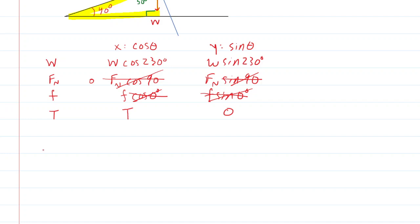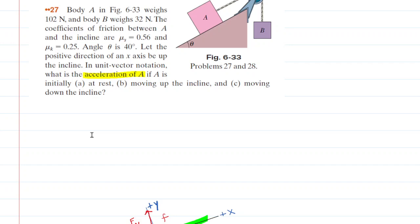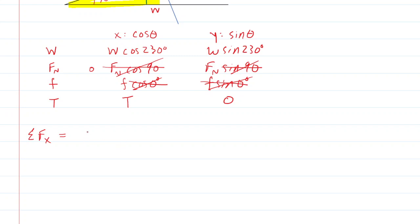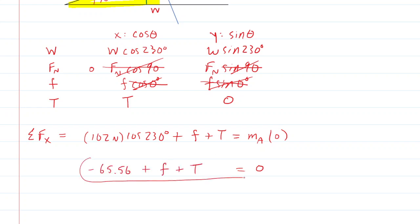Now we apply Newton's second law and take the sum of forces in the x-direction. We have the weight of body A, which was given as 102 newtons. So we have 102 newtons times cosine of 230 degrees, plus F, plus T, and this equals the mass of body A times its acceleration. In part A, the acceleration was 0 because the body was not moving, so the right-hand side simplifies to 0. Computing 102 times cosine of 230 gives negative 65.56. We circle that equation because we have two unknowns.